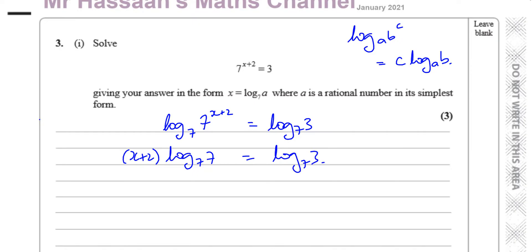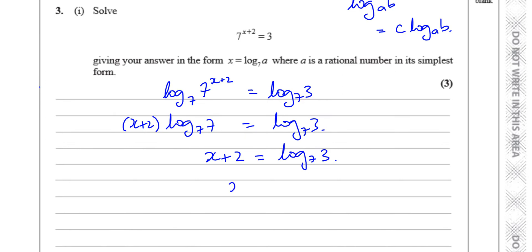So you end up with x plus 2 times log to the base 7, 7 equals log to the base 7, 3. And log to the base of 7 of 7 is 1. Log to the base of anything of itself will always be 1 because this means 7 to the power of 1 equals 7.